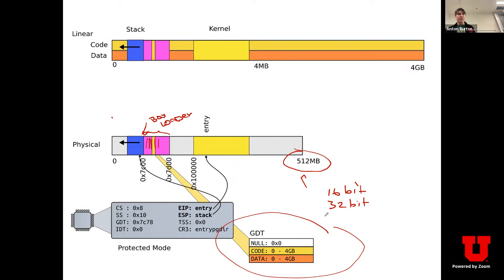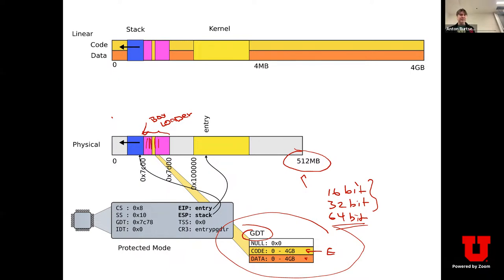On modern machines your end goal would be to switch into 64-bit mode, which is not that hard. For now we're sticking to the 32-bit version, which is a little easier. We only need two GDT entries: one for code, one for data. The code segment is marked executable and the data segment is read-write. Linear addresses cover everything from 0 to 4 gigabytes, base is 0, so any address in a register goes directly on the memory bus.